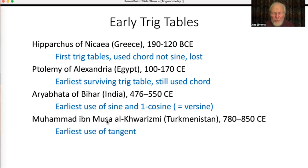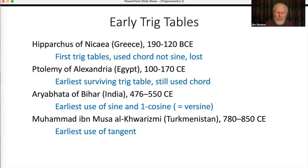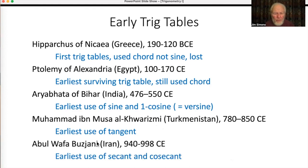Tangent has a slightly different history from sine and cosine, because all these people were primarily astronomers — sine and cosine were born in astronomy — but tangent was born in making sundials. Al-Battani was the one who brought them together, so trigonometry escaped from the clutches of astronomy around that time. Until then it had been thought of only as a tool for astronomers. Another figure was the first to use secant and cosecant.